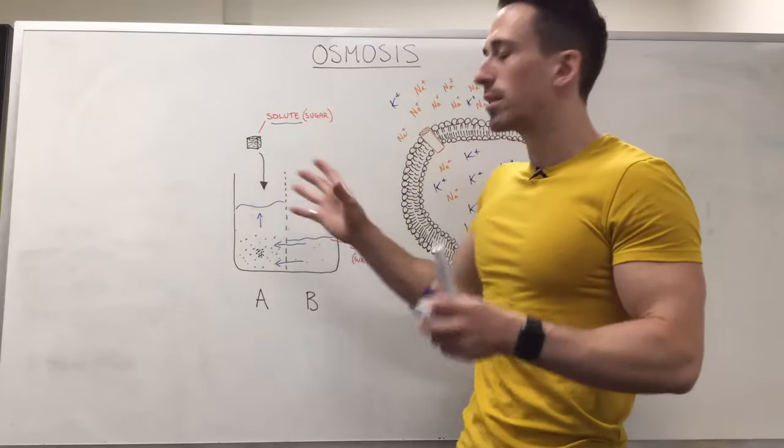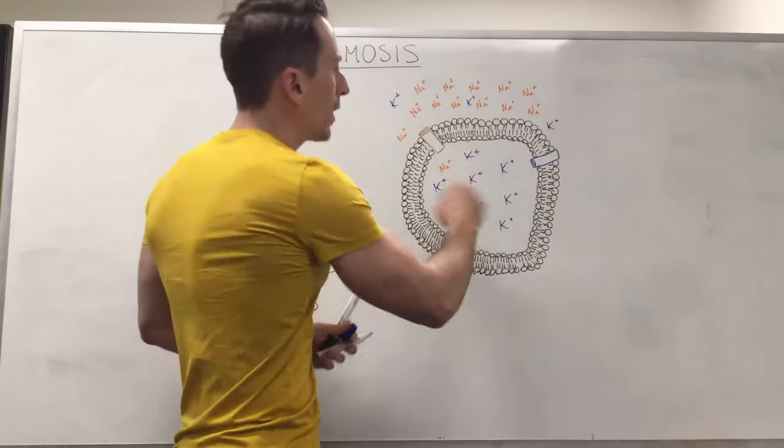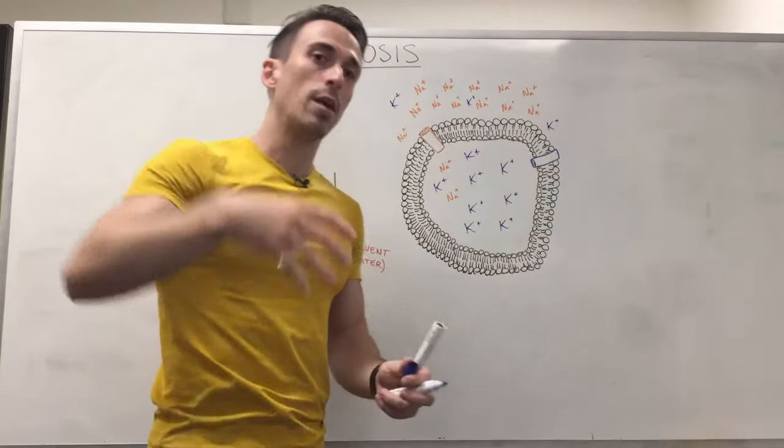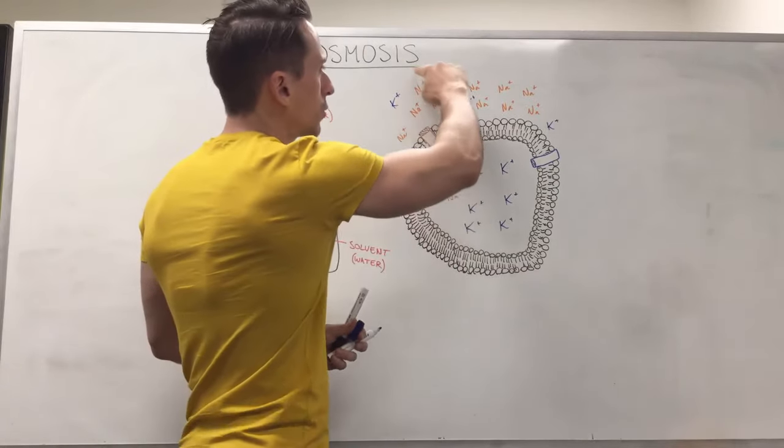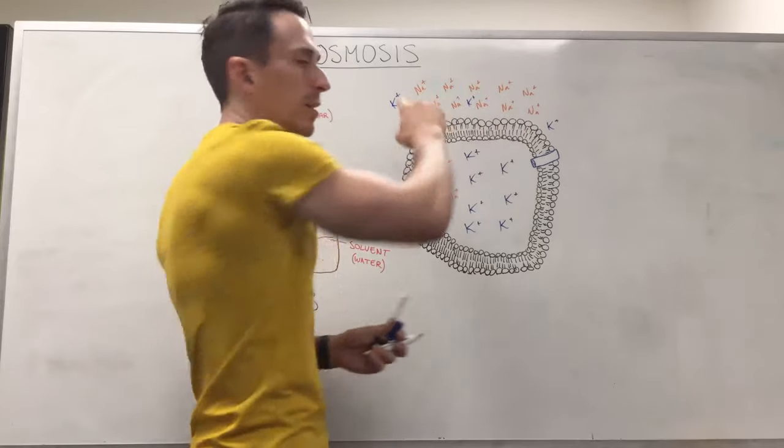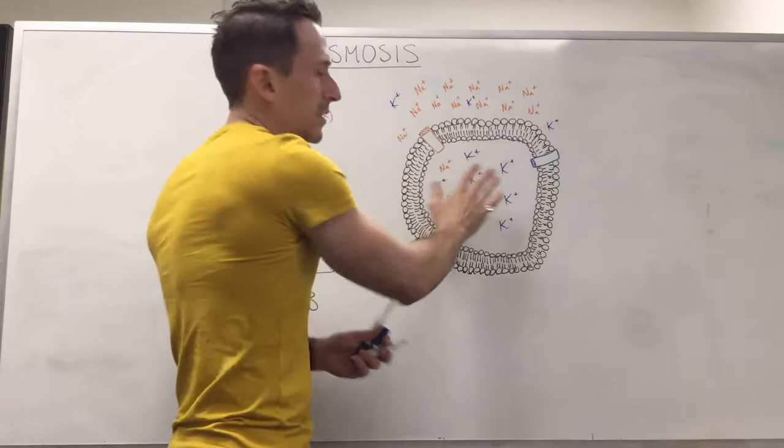Now why is this concept important physiologically? Well when we have a look at a cell again, I drew this up when we looked at the diffusion video. I said to you that in diffusion we've got high concentration of sodium ions outside the cell and they want to diffuse into the cell to balance out their concentration.